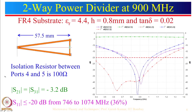Looking at the reflection coefficient shown in purple: the bandwidth for S11 less than minus 20 dB is shown. S11 less than minus 20 dB implies 1 percent reflected power, so 1 percent is reflected and the rest is transmitted. From the horizontal line drawn at minus 20 dB, one can see the bandwidth obtained is about 36 percent.